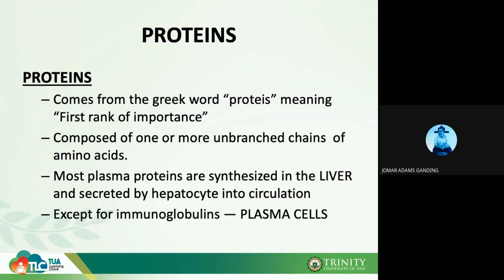Immunoglobulins are secreted from plasma cells. Plasma cells are originally B cells, which are a type of lymphocyte. Remember: CD4 and CD8 are T cell markers, not B cell markers. B cells are neither CD4 nor CD8 — those classifications belong to T cells.